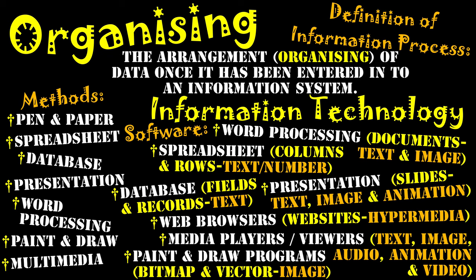So organizing is all about how the data will be arranged once it's entered into the system — we haven't actually done anything to it yet. When we actually start modifying this data and turning it into information, that all happens in the information process of analyzing. For example, entering text and numbers into a spreadsheet is organizing, but using formulas to calculate that data — that's a process of analyzing, which comes up in our next information process. I hope this helps illustrate what organizing is as an information process and the role it plays in information systems.